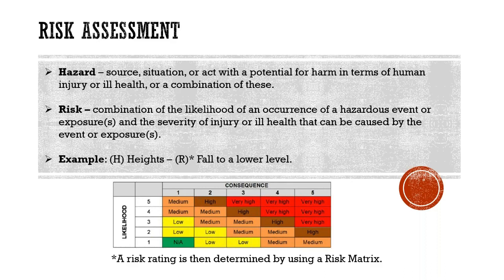For smaller operations you can use the exact same system with a basic risk rating of low, medium, and high. The risk rating is determined by the risk matrix — a simple one-to-five system using likelihood and consequences. For example, when working at heights, there is the risk of falling to a lower level, dropping tools, or items falling off the edge of where you are working.